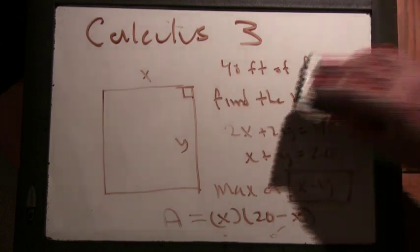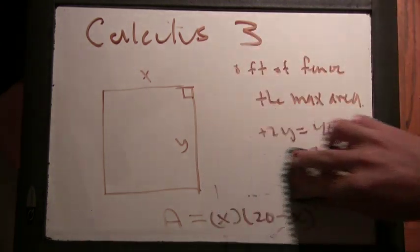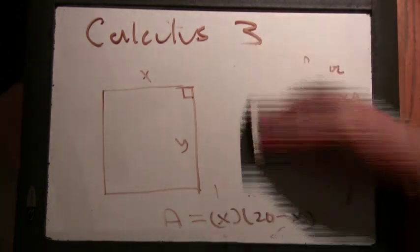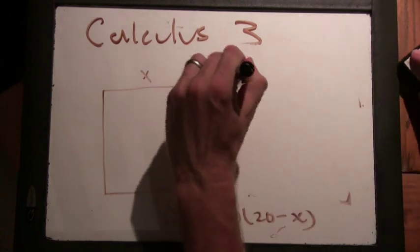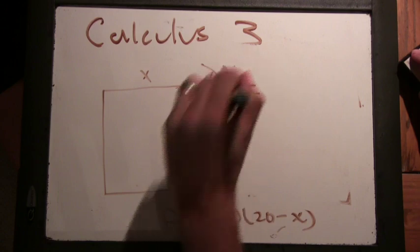Now, what sort of shape is x times 20 minus x going to be? It's a parabola. Okay. So we're trying to find dA dx. And there's a couple different ways you could do this, but you can tell me what it is.